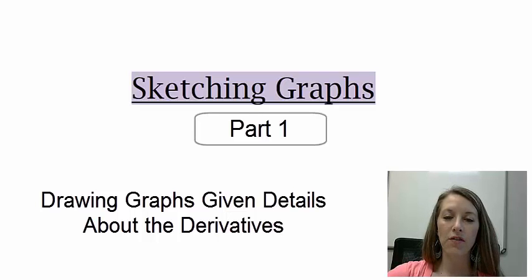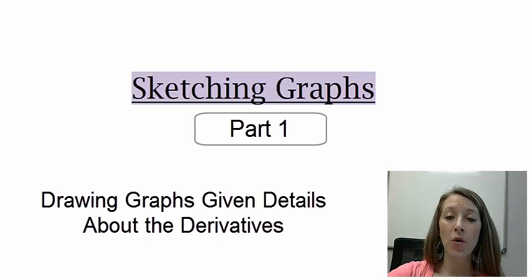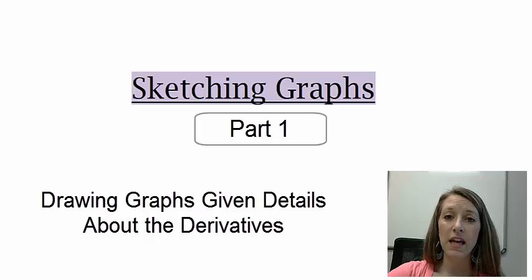In the last two sections we focused on increasing, decreasing, extrema, maximums, minimums, concavity, and inflection points, and how those affected the graph. In this section we're going to talk more about graphs and how to graph things, even if they didn't give us the original function. We've been spoiled because we could always plug the original function into a graphing calculator. In this section we are not going to have that luxury — we just have to take the information given and sketch a graph from that information.